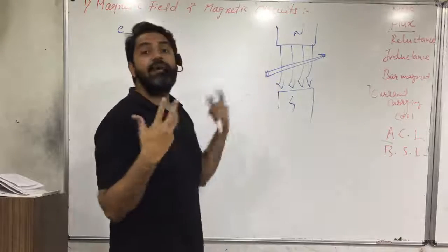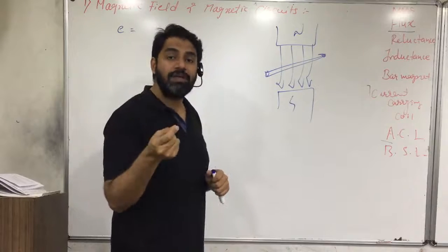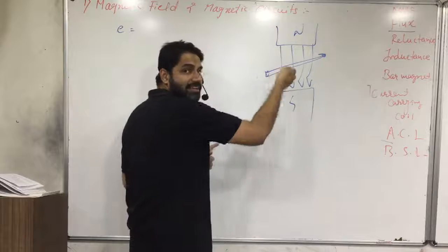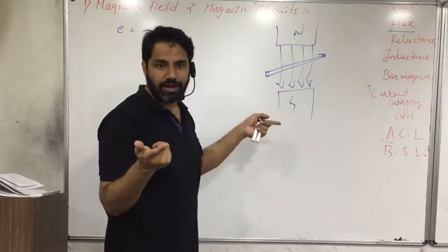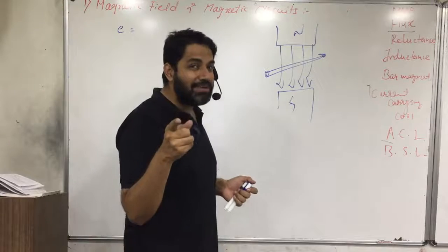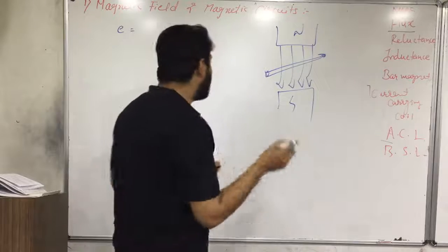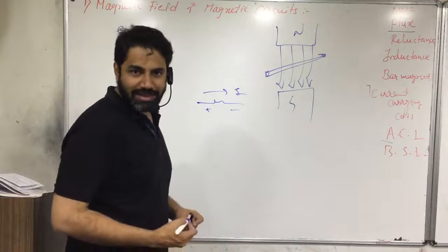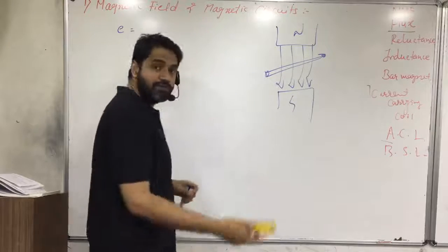There is a difference between voltage and EMF. EMF is developed because of non-electrical forces — here a mechanical force is given to the conductor, inducing or developing EMF in it. Voltage, or potential difference, is what you get when current flows through a resistance. A battery also produces EMF but uses chemical means to do so.